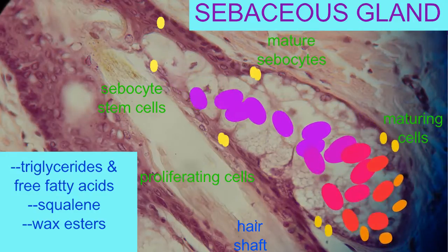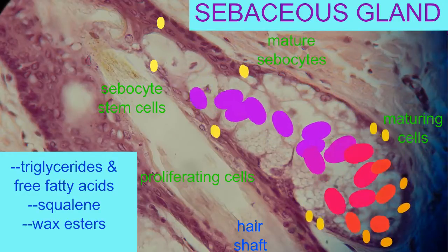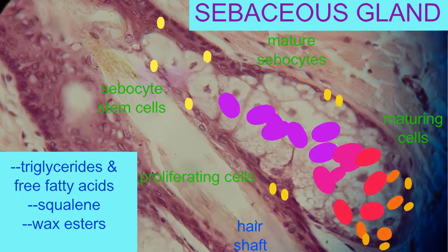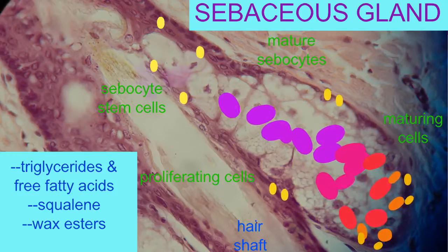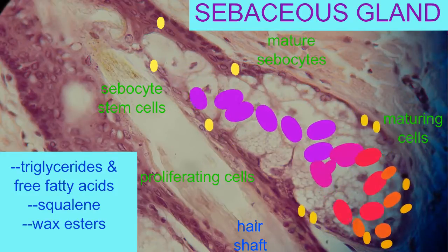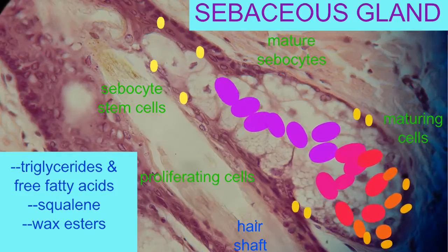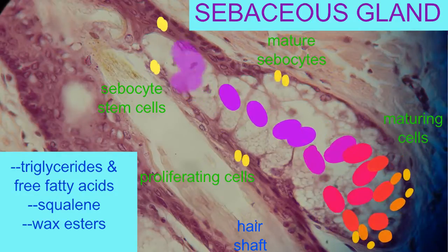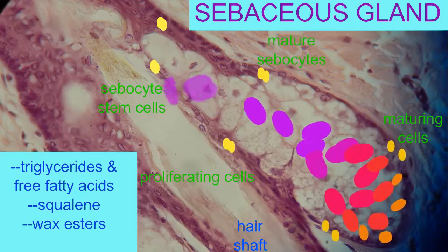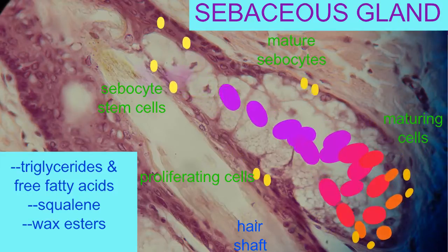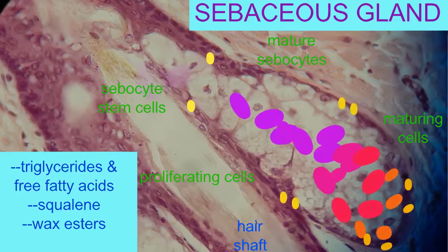they swell and ultimately will burst, because these are holocrine glands which secrete their products by the bursting of the cells which produce the various components. The burst cells and the lipids that they contain then form the waxy secretion